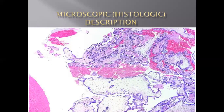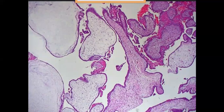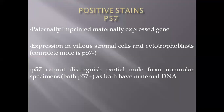The two distinct villus populations are a histological hallmark of the partial mole — not a feature of the complete mole. There is also focal hyperplasia of the trophoblastic tissue, visible in this slide as a large villus with abnormal borders and focal trophoblastic hyperplasia, in contrast to the complete mole which shows circumferential and more extensive trophoblastic hyperplasia. If the pregnancy extends beyond the first trimester or 14 weeks, some nucleated RBCs or capillaries may be seen in the villi due to the fetal component.